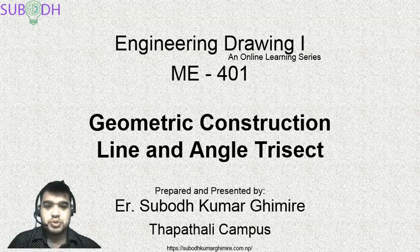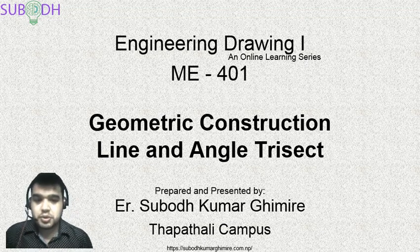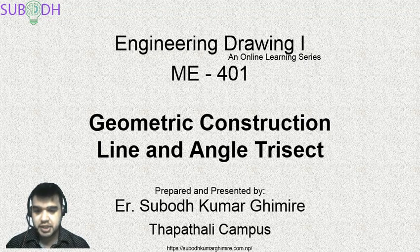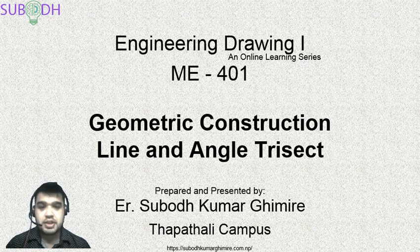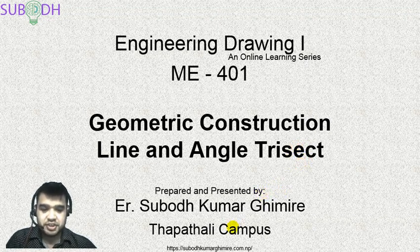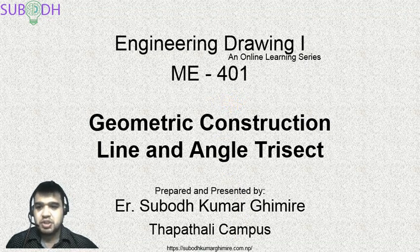Hello everyone, welcome to Engineering Drawing One, an online learning series, subject code ME401. This is on geometric construction. Last lecture we covered line bisection, triangle, and trisection — dividing into two equal parts and three equal parts. This is from the Department of Automobile and Mechanical Engineering.